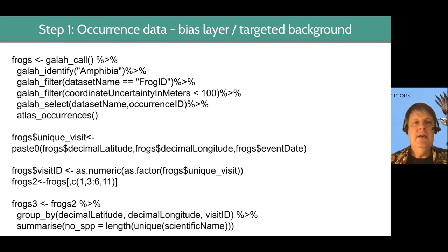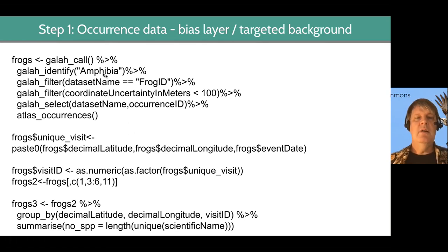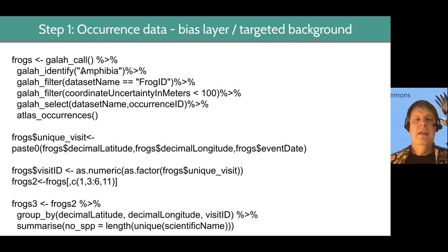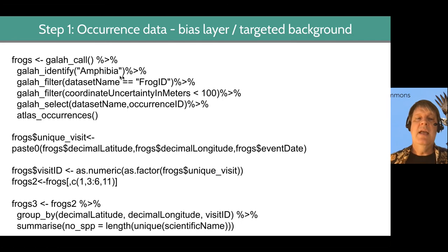In this case, we're downloading all the frog records within ALA. Using the galah_call(), we take similar criteria but we want Frog ID records that have identified any frog, and turn that into an occurrence dataset called 'frogs'.